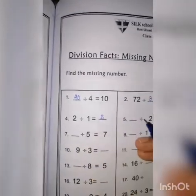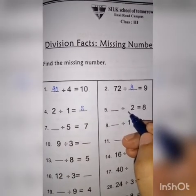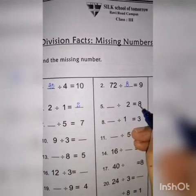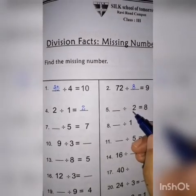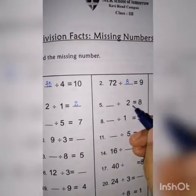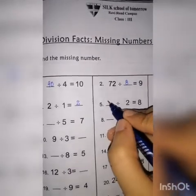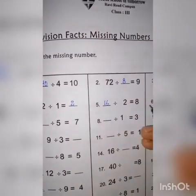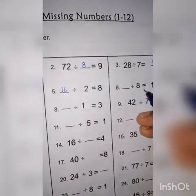اس کے بعد ہے dash divided by 2 equal to 8۔ اب میں کس پہ divide کروں؟ یہ divide ہو رہا ہے ادھر، جا کے multiply ہو جائے گا — 2 کو میں 8 سے multiply کروں گی تو آئے گا 16۔ تو 16 divided by 2 کا answer کیا آئے گا؟ 8 ہی۔